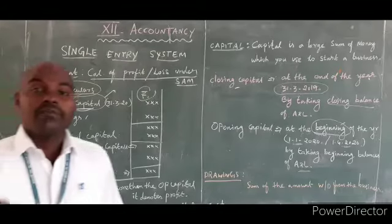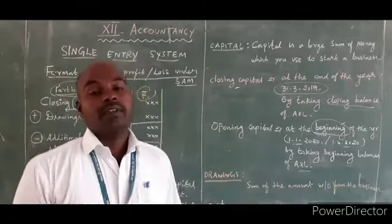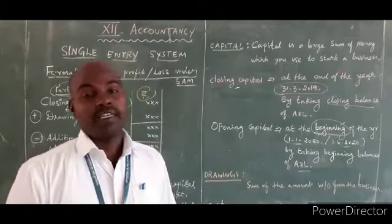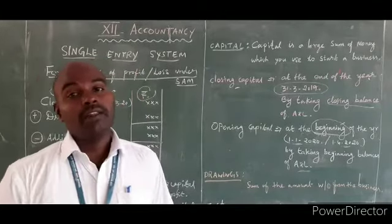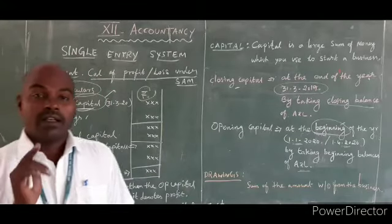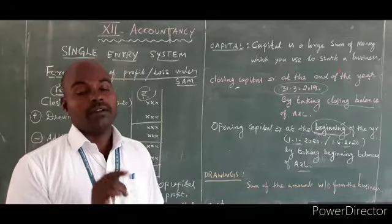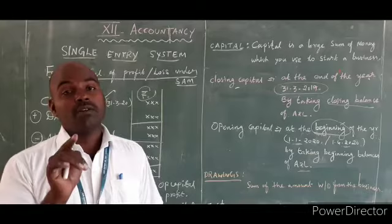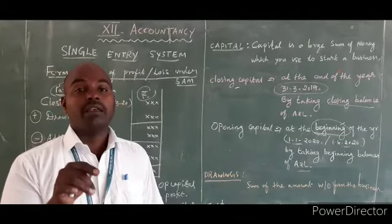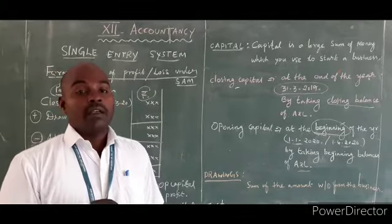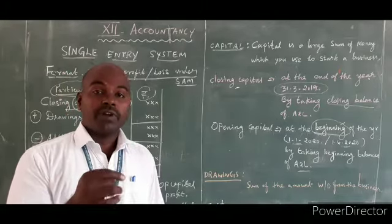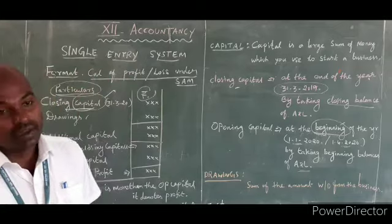How to calculate profit or loss of the business under the Single Entry System? Follow 5 steps: Step 1 — closing capital; add drawings; less additional capital during the year — the answer will be adjusted closing capital; less opening capital — the answer will be profit or loss. Plus means profit, minus means loss.